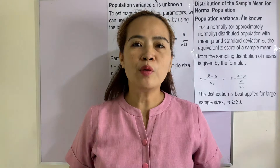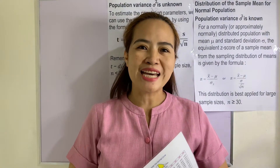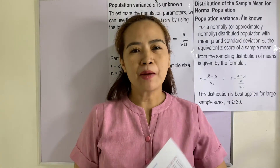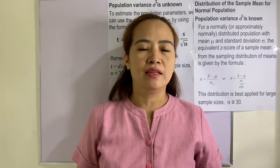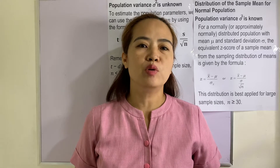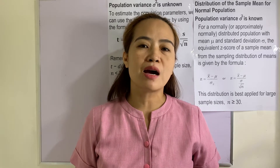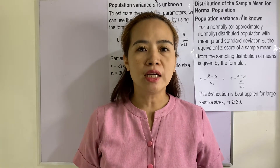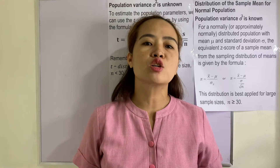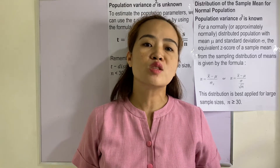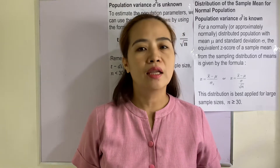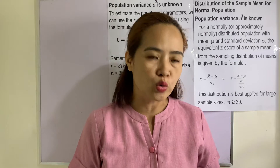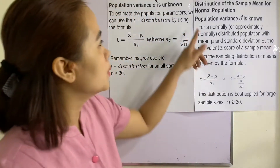Hello everyone, welcome back to my channel. Our topic in this session is defining the distribution of the sample mean for a normal population if the population variance is known and if the population variance is not known. Let's do it.